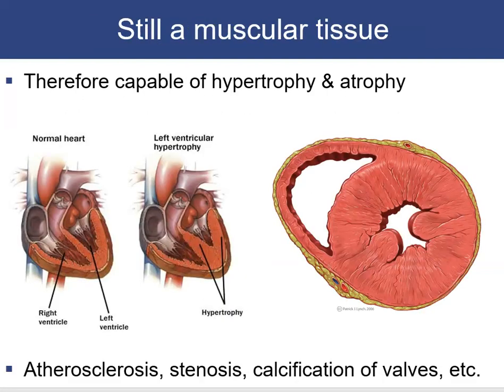The heart is still capable of hypertrophy and atrophy, occurring as a result of atherosclerosis, stenosis, or calcification of valves. Unlike skeletal muscle hypertrophy, cardiac hypertrophy is not a good thing — it means the heart has to work harder and creates more strain and stress.